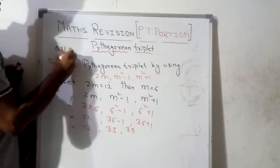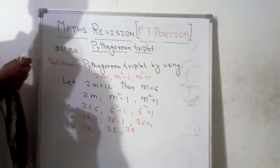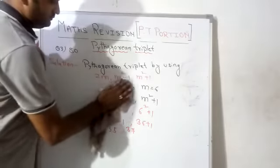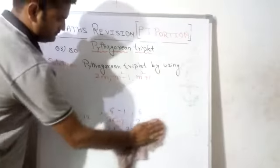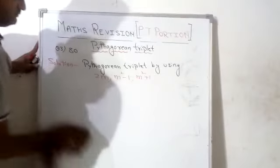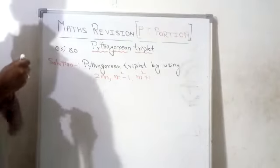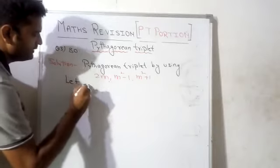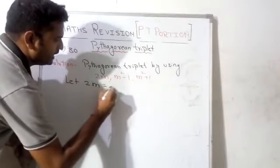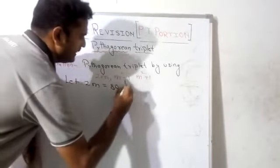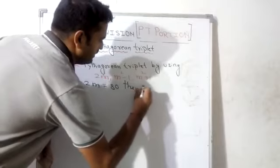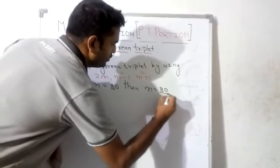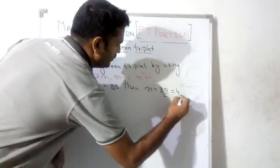Find the Pythagorean triplet of 80. Let 2m equal to 80, then m equals 80 divided by 2, which equals 40.